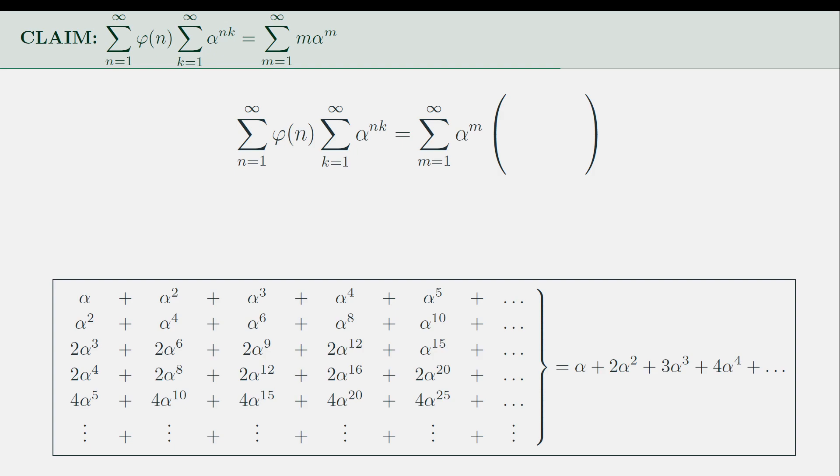This means that, for example, α^6 should be seen for the case when n equals 1, n equals 2, n equals 3, and n equals 6.